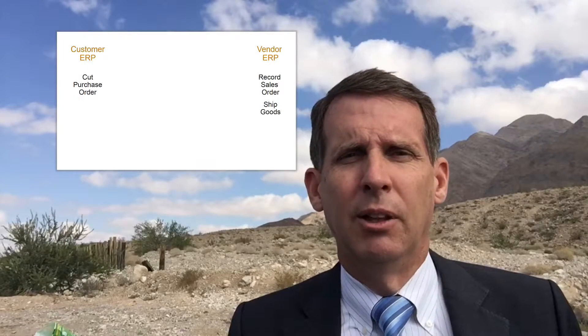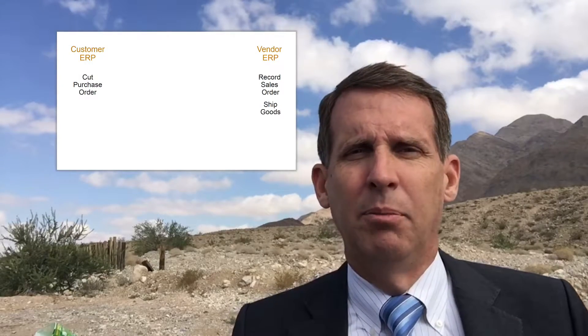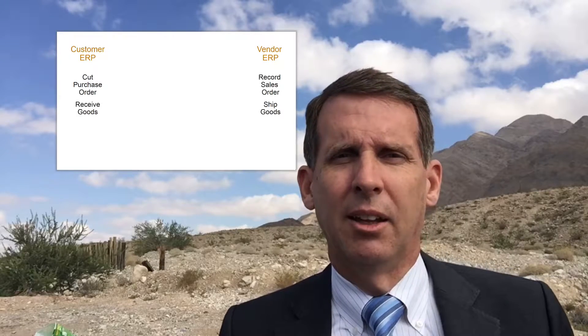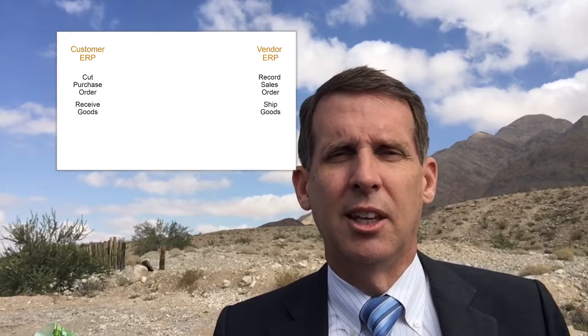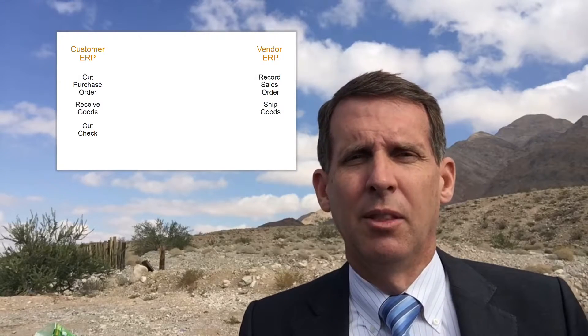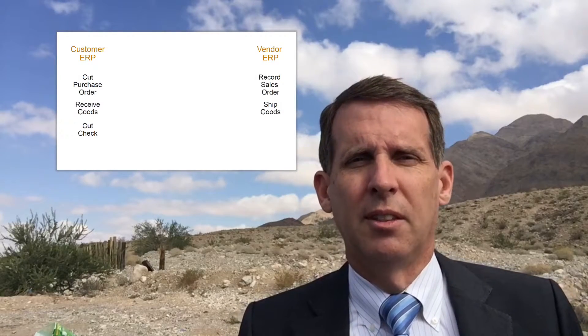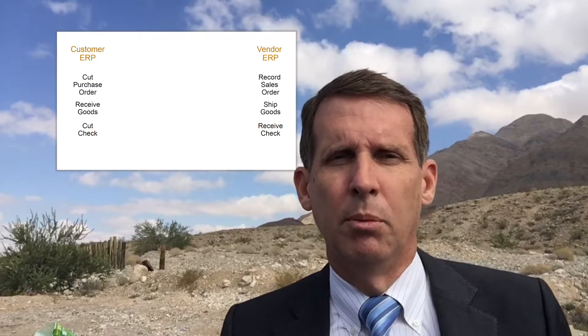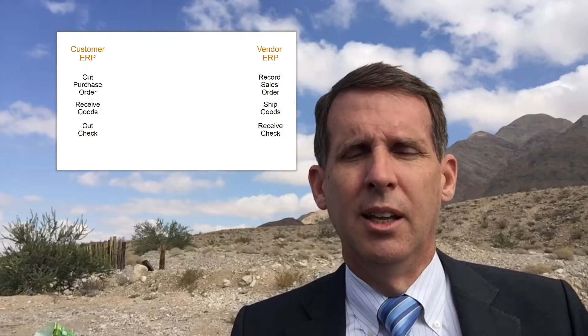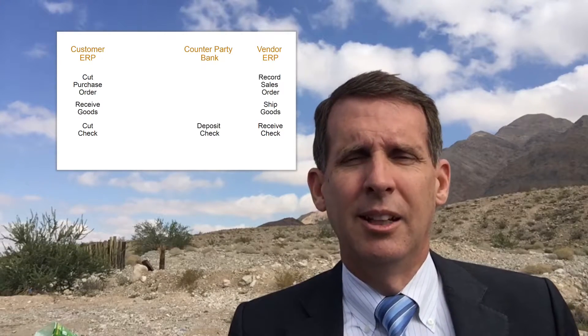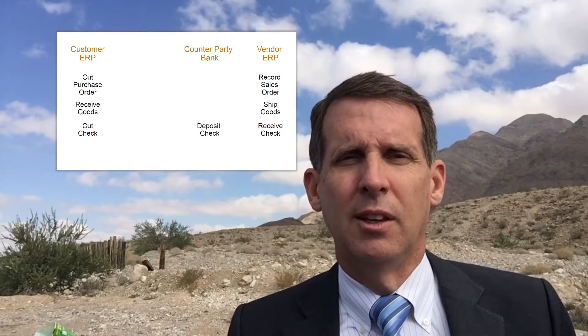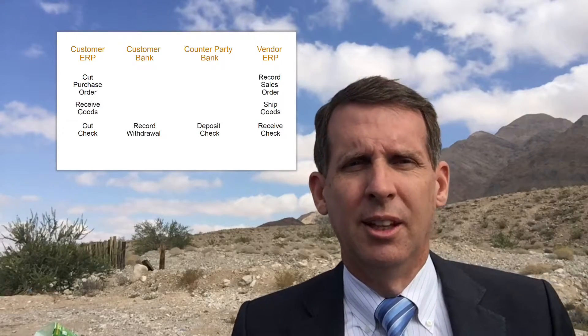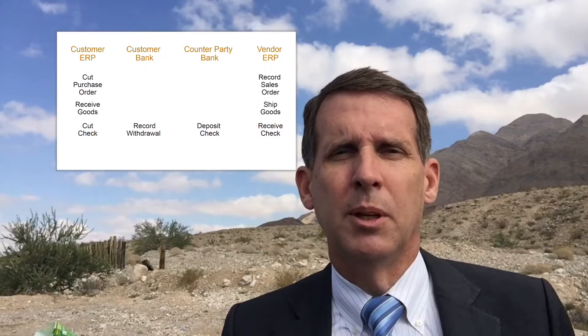Once company number two ships the goods, they create a bill of lading and send that over with the goods. The receipt of goods then has to get entered as received goods — again, data duplicated in two different places. Finally, the bill is sent across from one party to the other. The other party submits a check to their bank, that bank submits it to the other bank, and the other bank tells the last company that payment has been received.